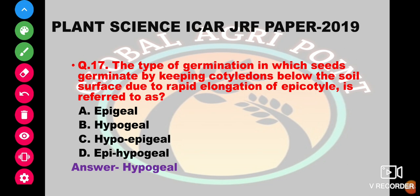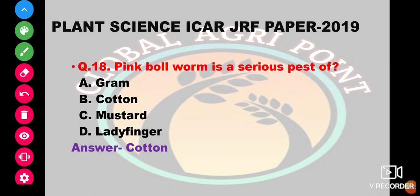The type of germination in which cotyledons remain below the soil surface due to rapid elongation of the hypocotyl is referred to as epigeal, hypogeal, or hypoepigeal. The answer is hypogeal, when the hypocotyl elongates.